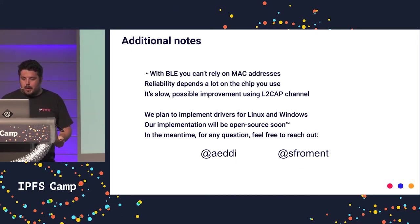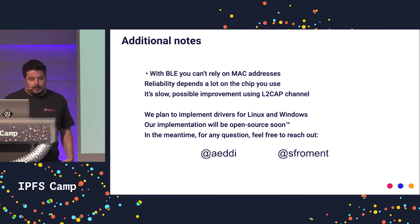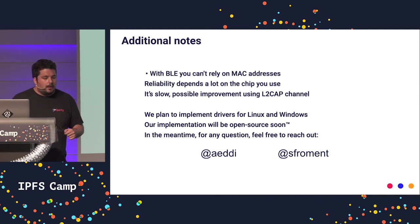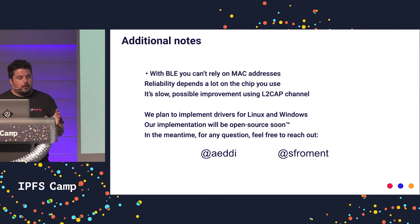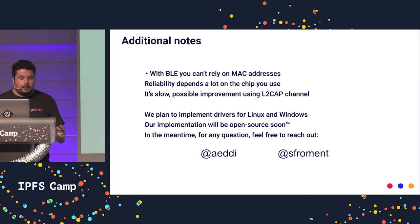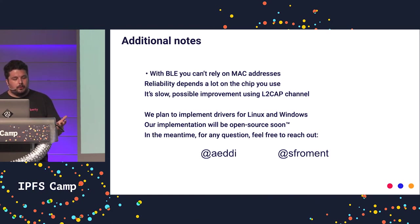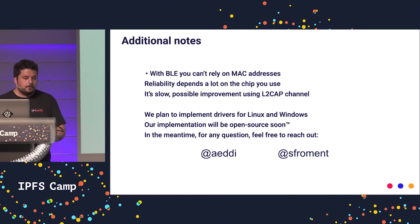Some final notes: you can't rely on MAC addresses with BLE because they rotate quite frequently. Reliability depends a lot on the chip you use — it's particularly noticeable on Android. It's slow; you can't send videos or big pictures with BLE. A possible improvement is to use L2CAP channels.